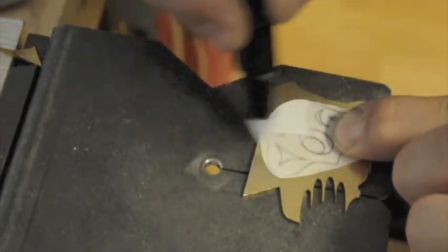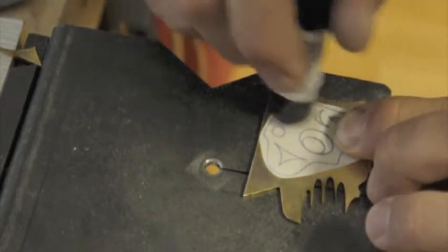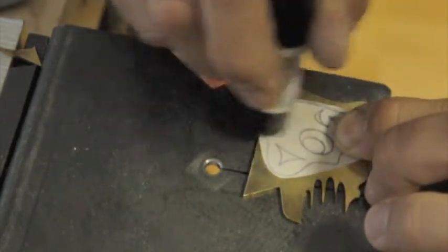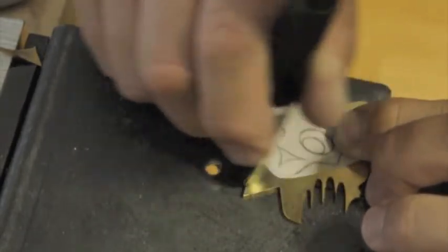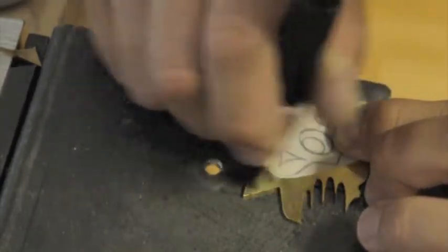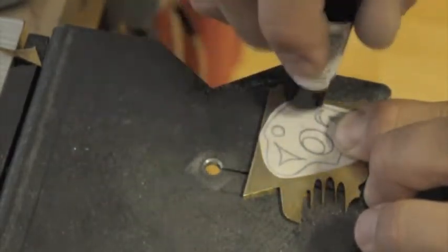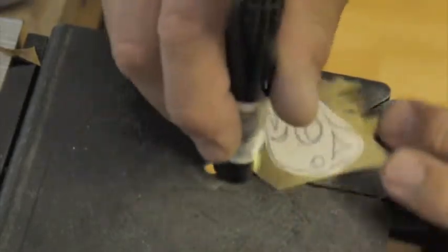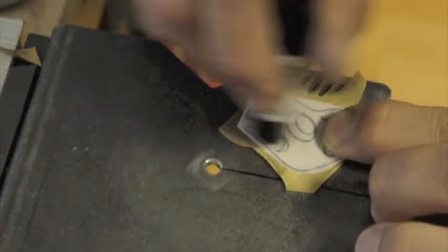If you flood this with too much solvent, it just bleeds around on the surface. Because the metal won't absorb this, it just kind of floats around on top. So we want enough to release the toner ink, but not so much that it washes straight off the silver.